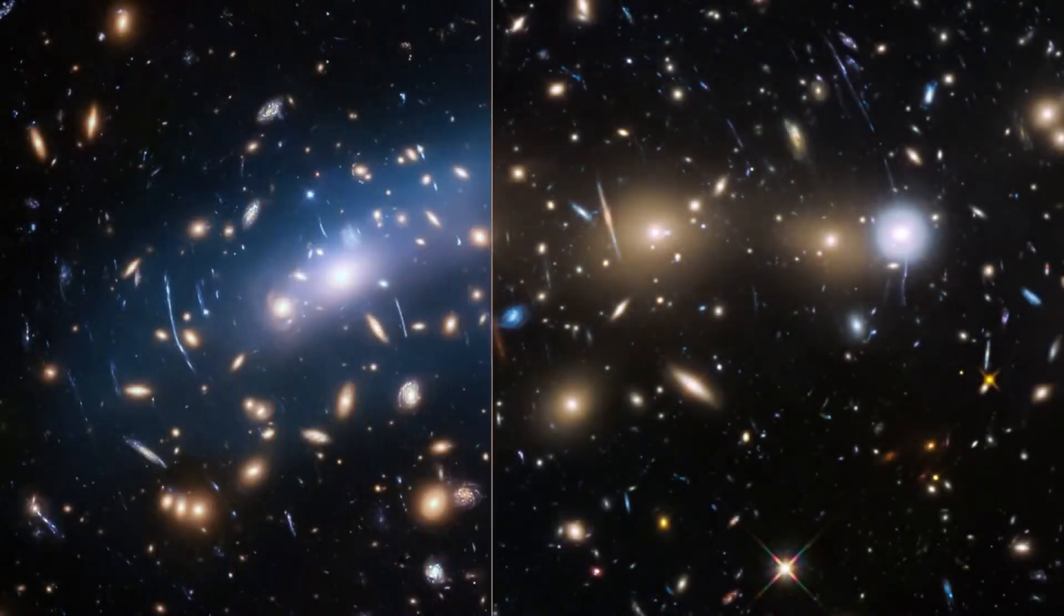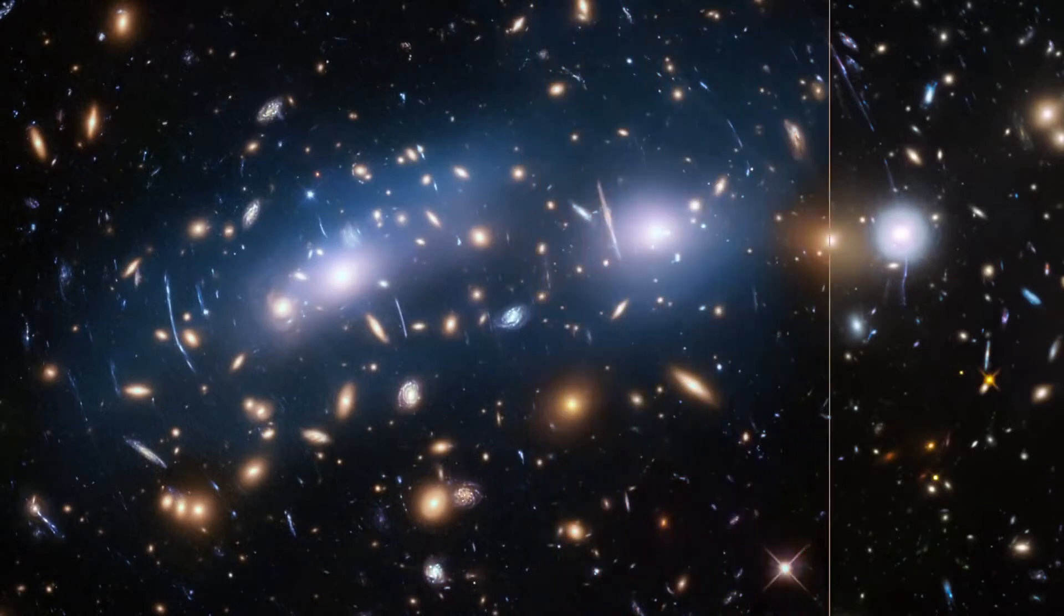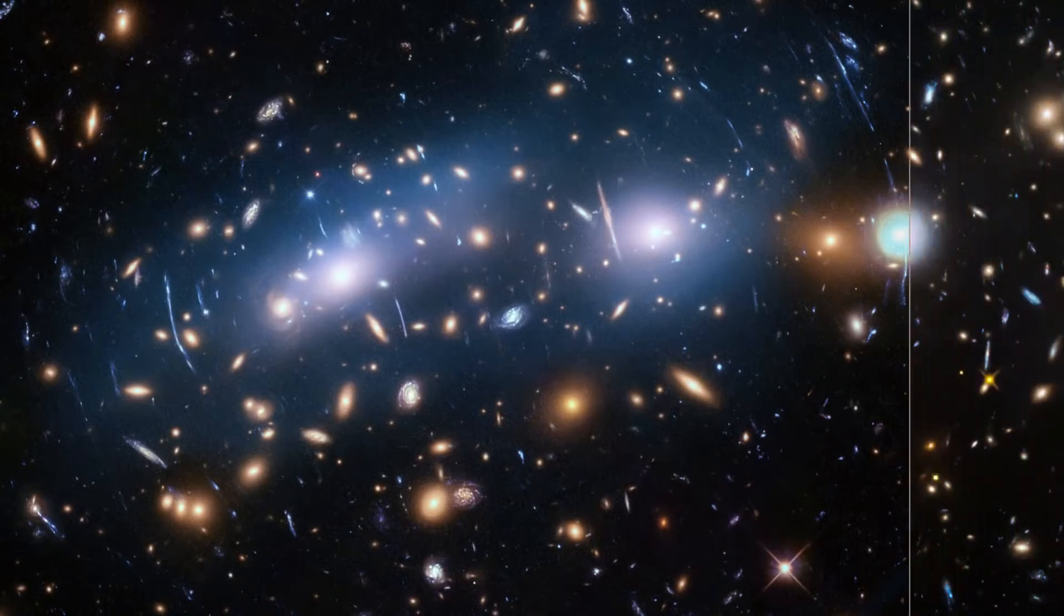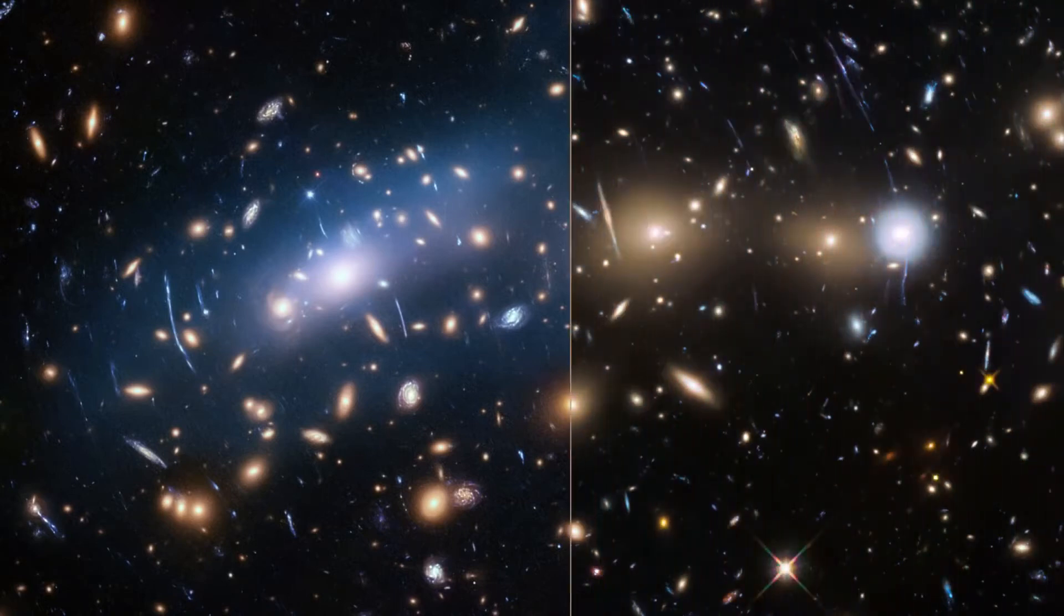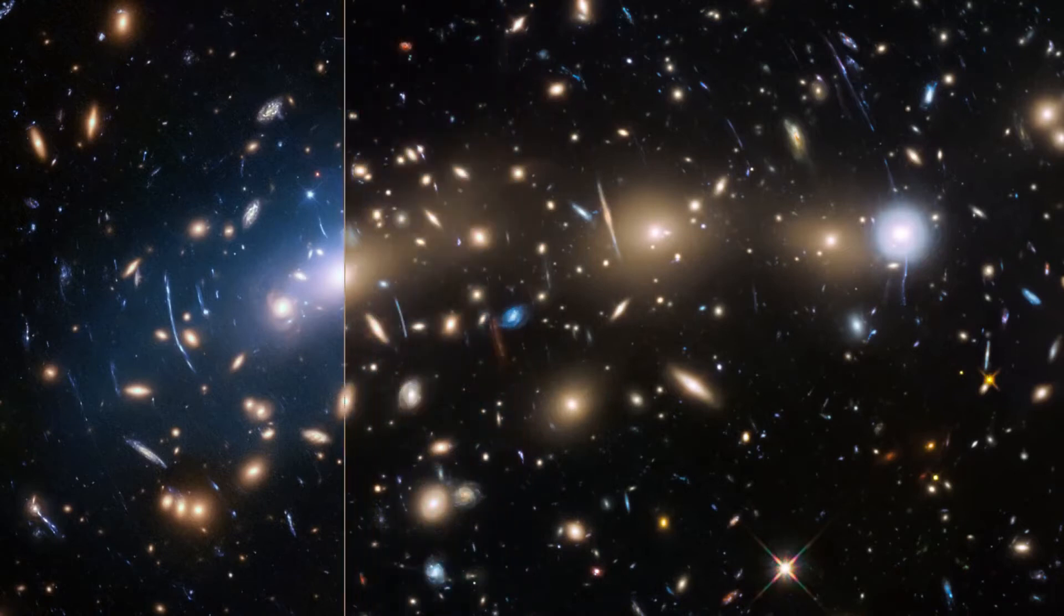Astronomers used Hubble to create a map of everyday visible matter from which they could trace the large-scale distribution of dark matter by studying how its gravitational presence distorted light in the images.